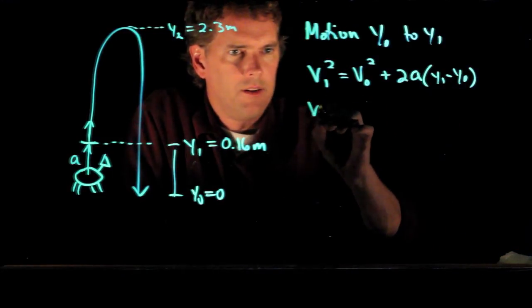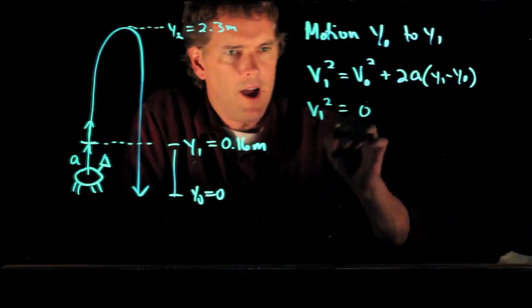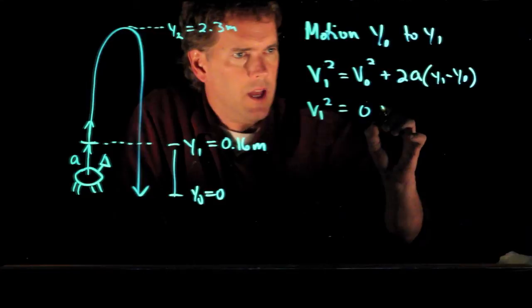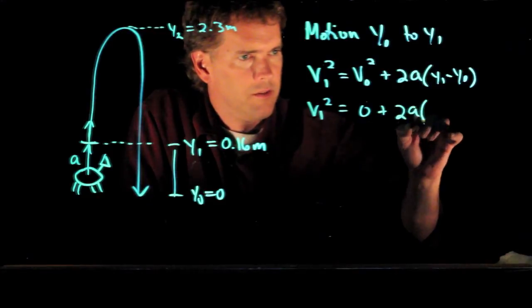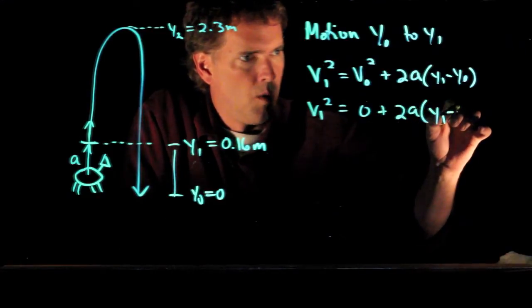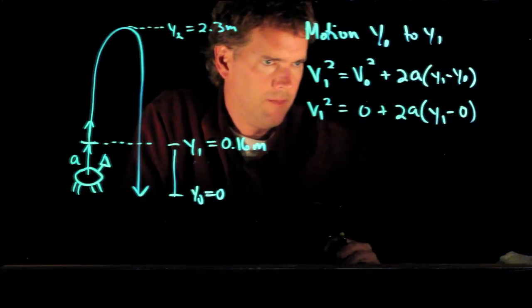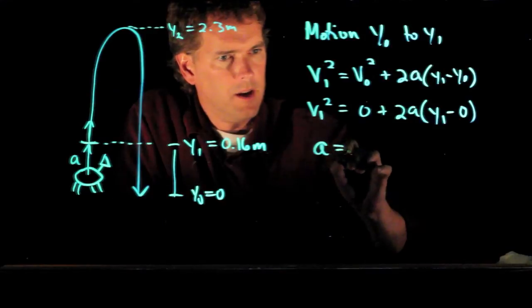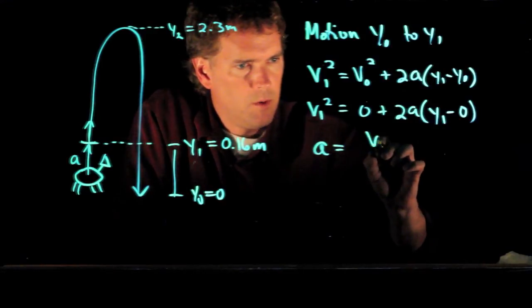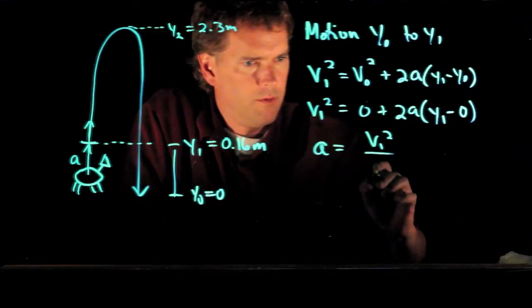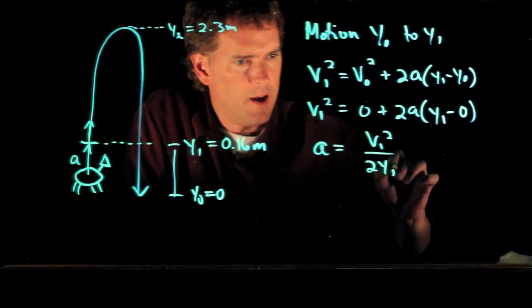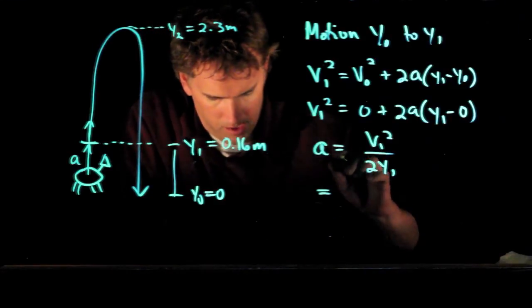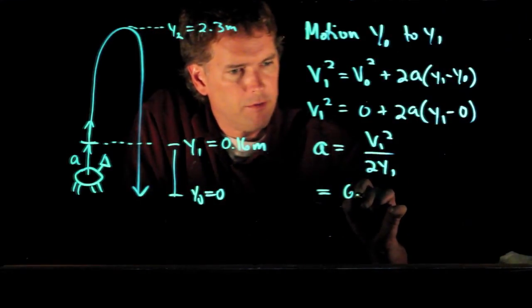Now they start at rest when they're on the ground, so that v0 is 0, and they also start at y0 which equals 0. And so we can solve this equation for a. Now a is equal to v1² over 2y1, and now we know all of those numbers, right? We just solved for v1, we said it was 6.48.